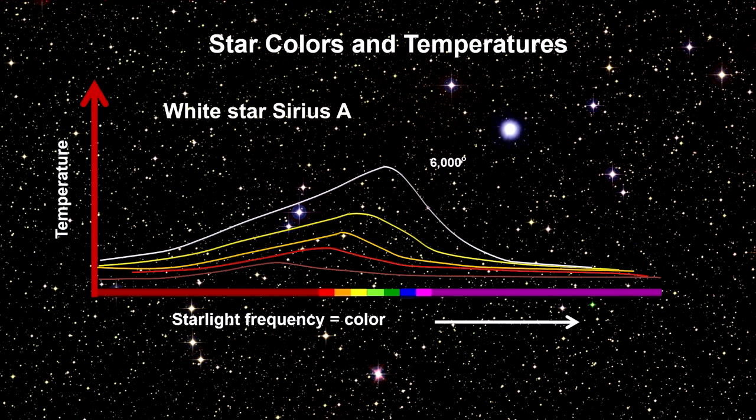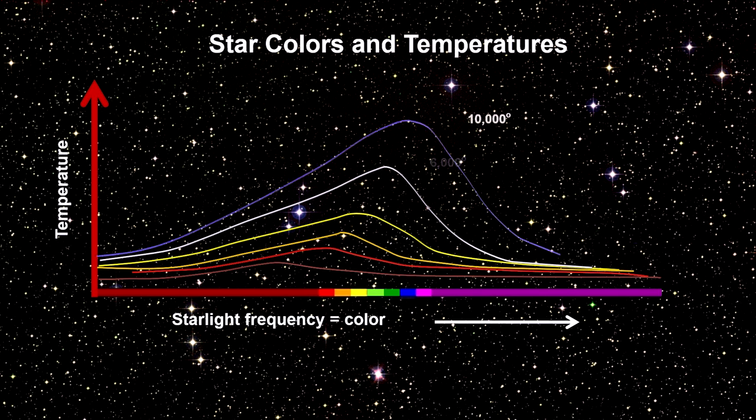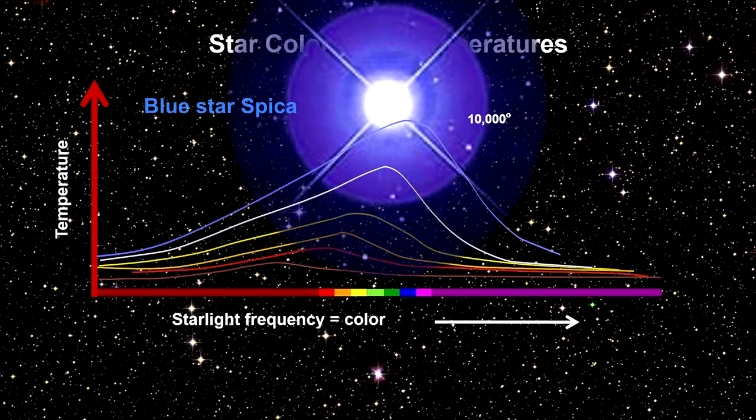Around 6,000 degrees, it is turning white. The star Sirius A is an example of this. And by 10,000 degrees, it has a distinct bluish color. Spica is a good example of a blue star.